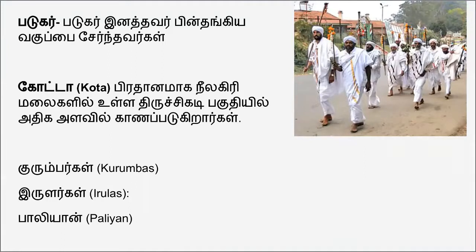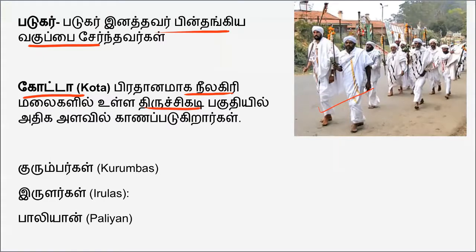The first tribe in Tamil Nadu is Badagas — they are in Nilgiris. They do backward castings but they are in the tribal population. They are on the middle side. The second tribe is Kota, also in the Nilgiris region. We have known the names: Kurumba, Irula, Paliyan — these are tribal populations in Tamil Nadu.